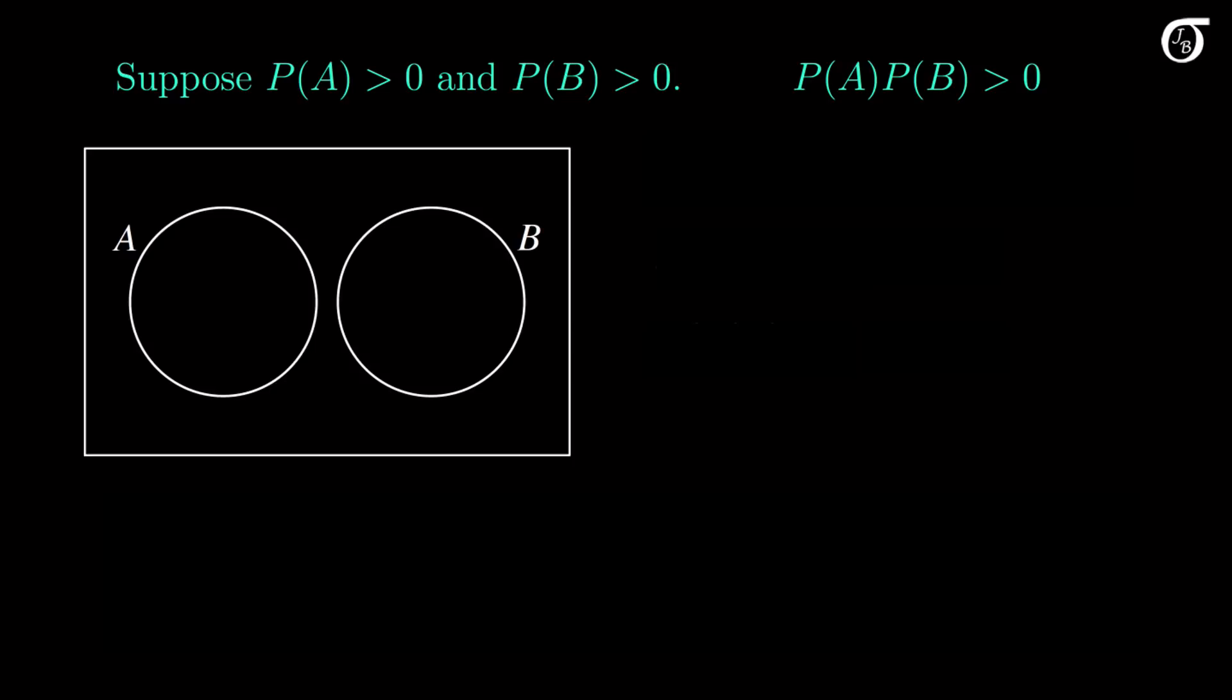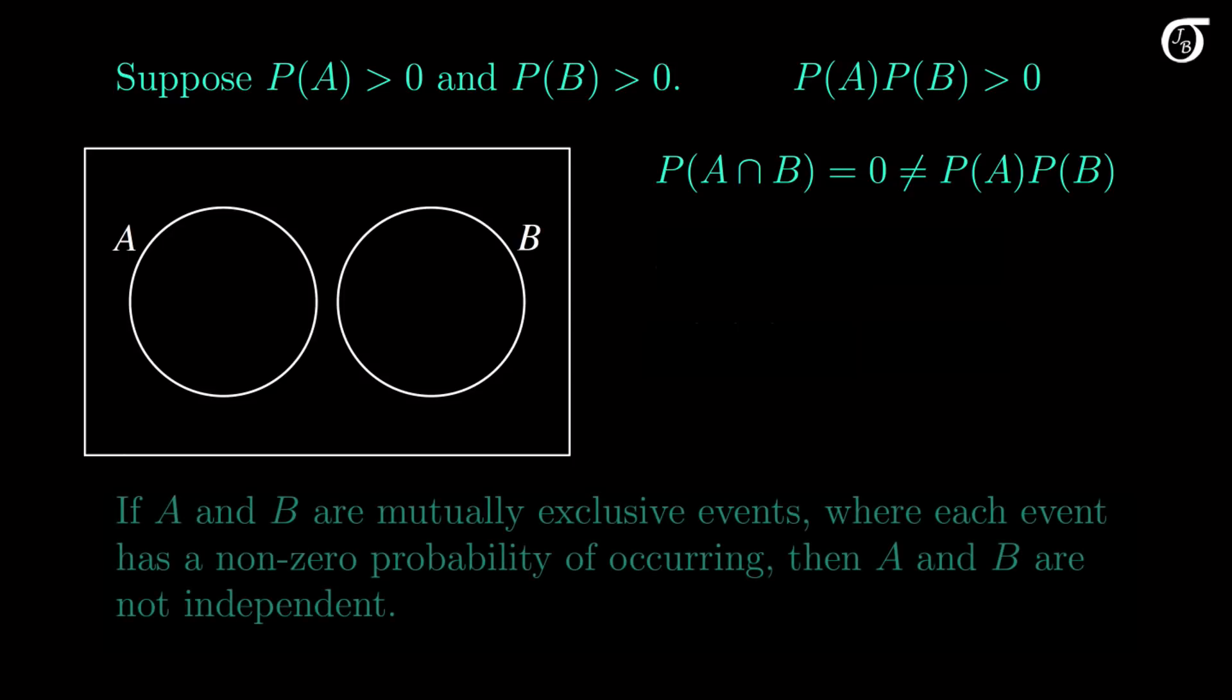They are assumed to be mutually exclusive here, so the probability of their intersection is 0, and thus the probability of their intersection is not equal to the product of their individual probabilities. This means that if A and B are mutually exclusive events with positive probabilities of occurring, then A and B are not independent.